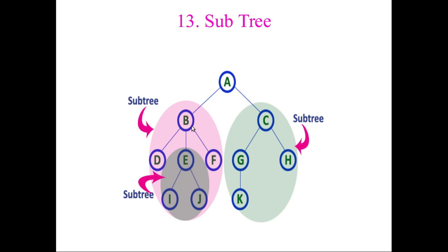Under B, there are nodes D, E, and F. D and F are leaves, but E has children, forming a sub-tree. So B forms a sub-tree with D, E, and F, and under E again there is another sub-tree with I and J. C is a sub-tree but it has no sub-tree under it. A sub-tree means trees exist recursively under a node — each child from a node forms a sub-tree recursively.